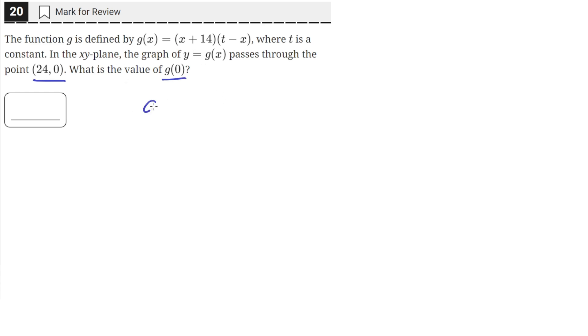We have this function g(x) = (x + 14)(t - x), and we're given that this passes through the point (24, 0).